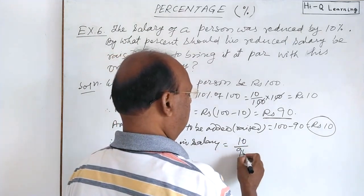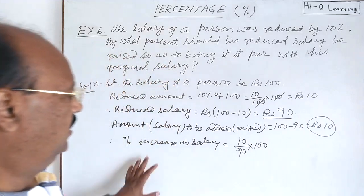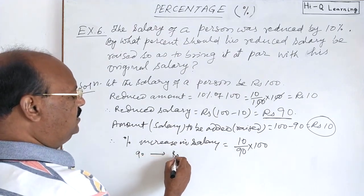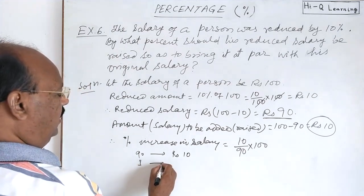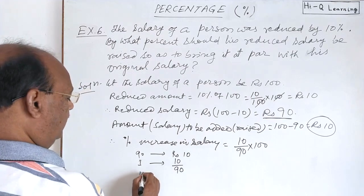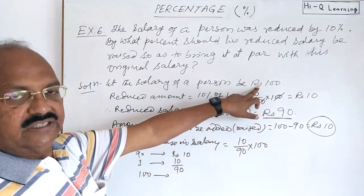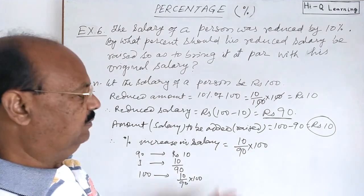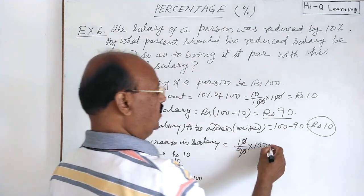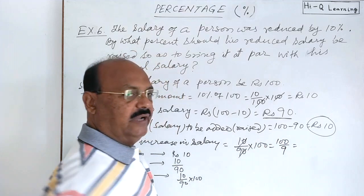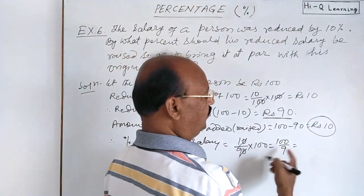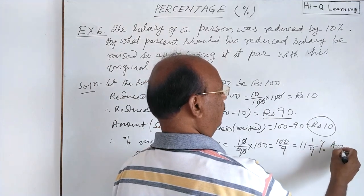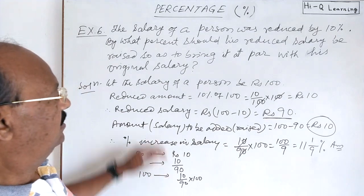This will be 10 by 90 into 100. We can understand this by the unitary method also: if salary is 90, increment is rupees 10; if salary is rupees 1, increment is rupees 10 by 90; and if salary is 100, increment is 10 by 90 into 100. Simplifying, the zeros cancel out, giving us 100 by 9. Dividing 100 by 9, we get 11 and 1 by 9 percent.